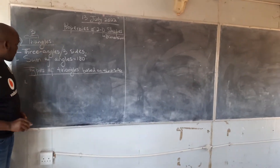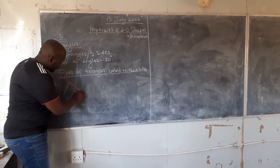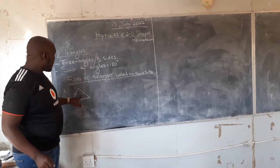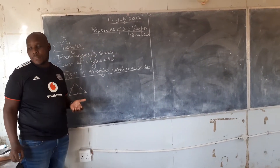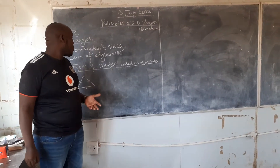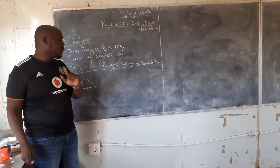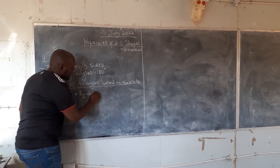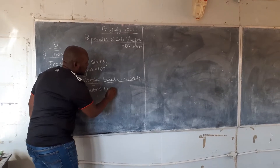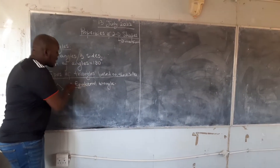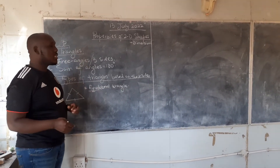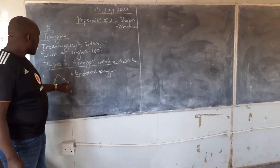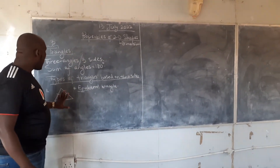The first triangle is this one here. These three lines mean that all the sides are equal. We call this an equilateral triangle. Equi means equal, so all three sides are equal in this type of triangle.